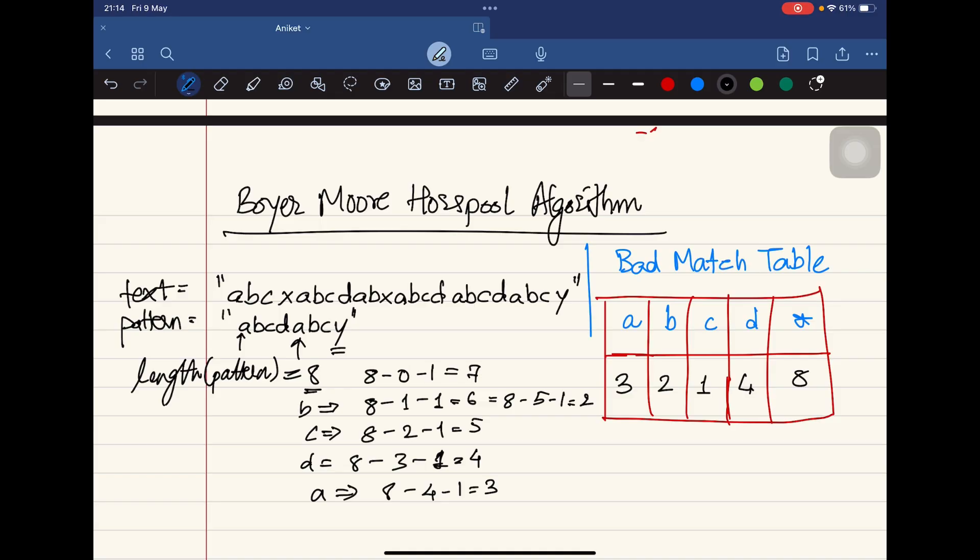What this particular table will do is the Horspool algorithm is going to look at this table whenever there is a mismatch. In this case, whenever there is a mismatch from the text with the pattern, let's say there is a mismatch at Y and D, we are going to look at the D value. The mismatch at Y and D means we check the value of D in the bad match table, which is 4 here. It means we need to shift the entire pattern 4 steps ahead. In this way we are going to skip a lot of comparisons.